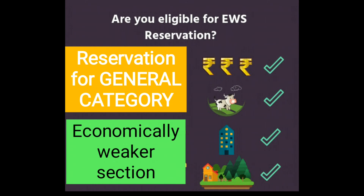EWS Reservation Eligibility: know the criteria to apply for 10% Economically Weaker Section quota seats. In this video, I will be telling you the criteria for the Economically Weaker Section reservation eligibility. The central government has recently introduced 10% reservation quota for economically weaker sections among general category candidates in government jobs and higher educational institutions. However, many are unsure about the EWS reservation eligibility. Watch this video till the end to know the exact criteria to be included in this quota.